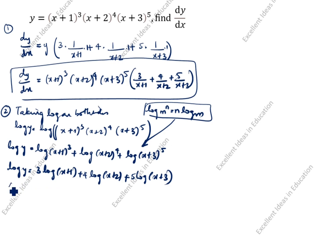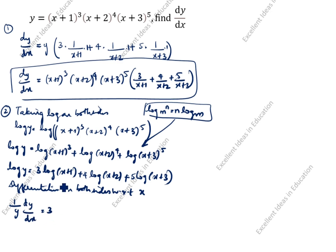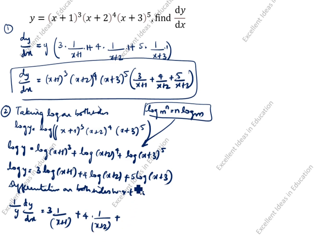After that, we do differentiation on both sides with respect to x. Differentiating log y gives (1/y)·(dy/dx). So: (1/y)·(dy/dx) = 3·(1/(x+1)) + 4·(1/(x+2)) + 5·(1/(x+3)). The differentiation of x is 1 only, so we do not write it separately.